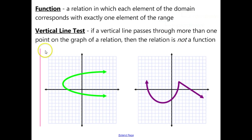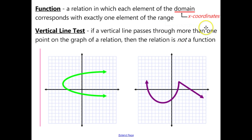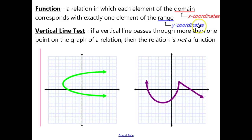A function is a relation in which each element of the domain corresponds with exactly one element of the range. That means each x-coordinate goes with exactly one y-coordinate — you cannot have an x-coordinate go to two different y-coordinate points.